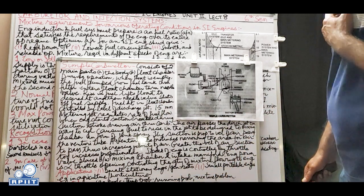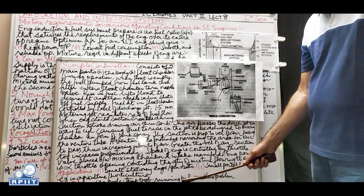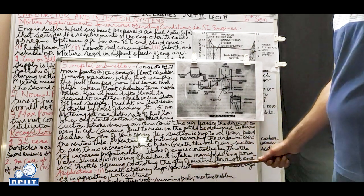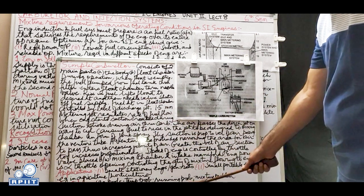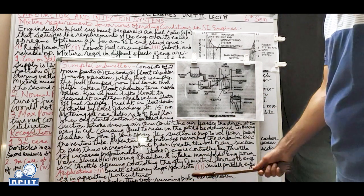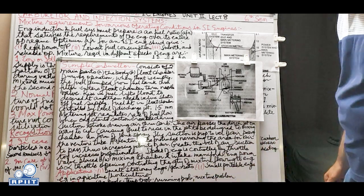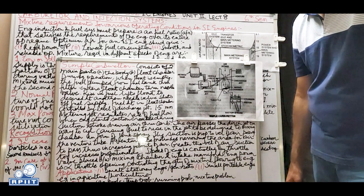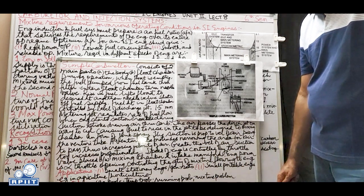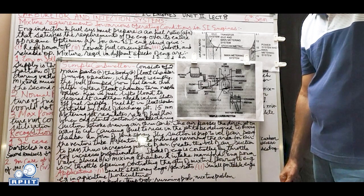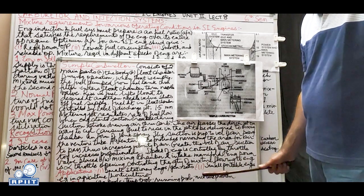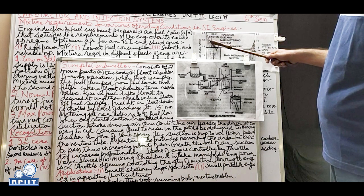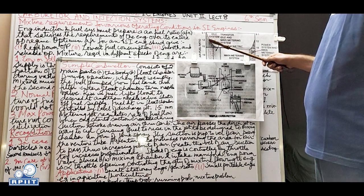Third: running problem - the simple carburetor works best at only one engine speed and is therefore user-limited. It works well only for static engines with constant speed. Fourth: mixture problem - similar to the first limitation; lean mixture at starting makes starting difficult. A richer mixture is required at start but the simple carburetor does not provide this adequately despite considerable research.